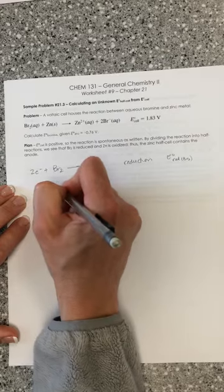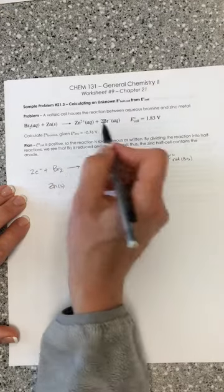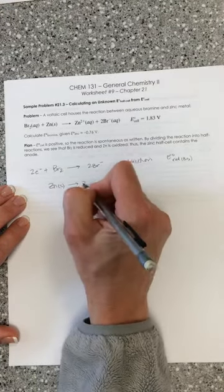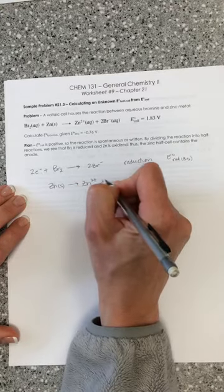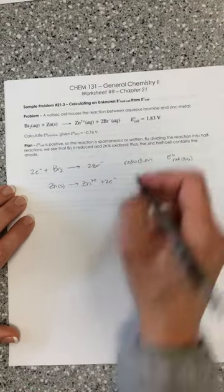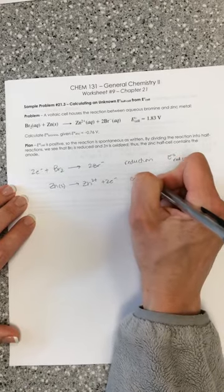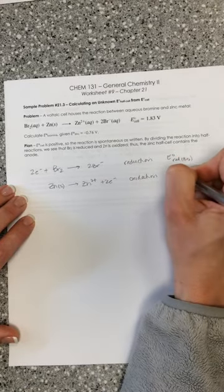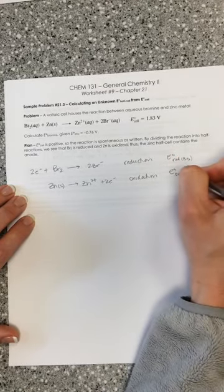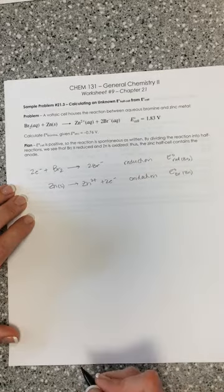The other one here, we've got zinc solid going to zinc 2 plus. The only way to do that is to have two electrons on the right. So this is our oxidation. E naught ox, this is for zinc.